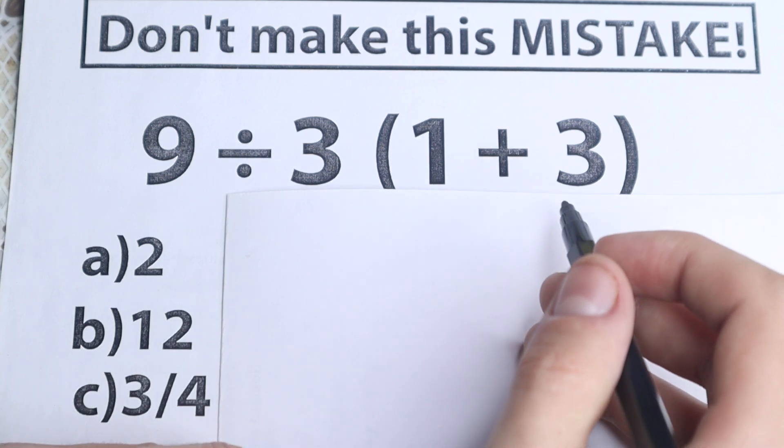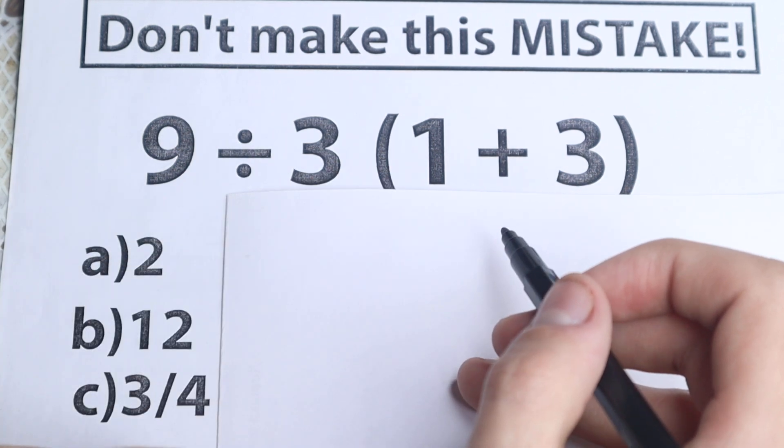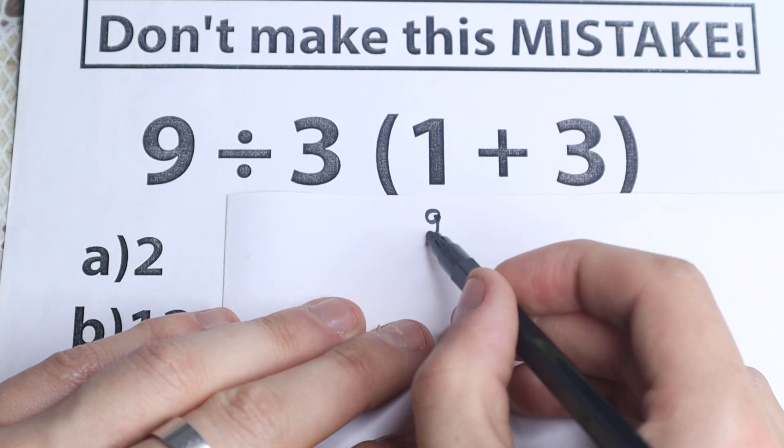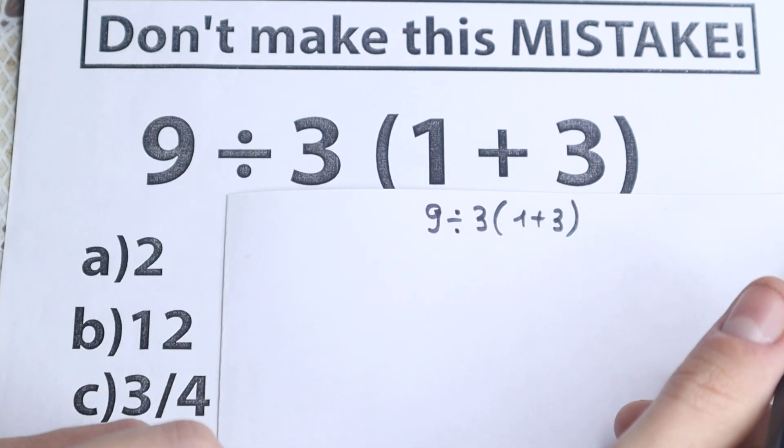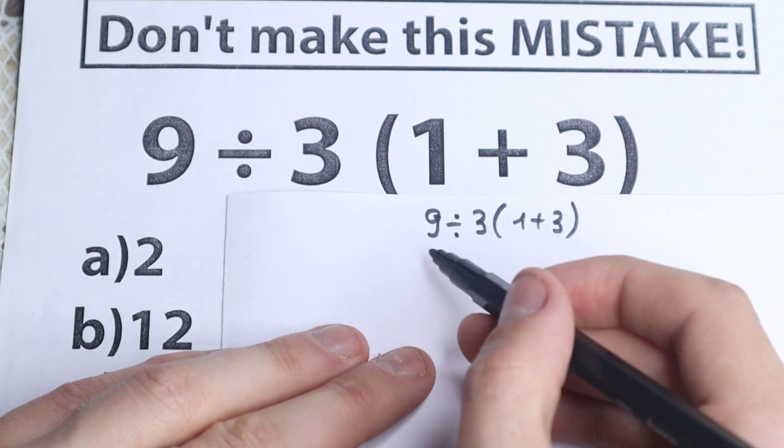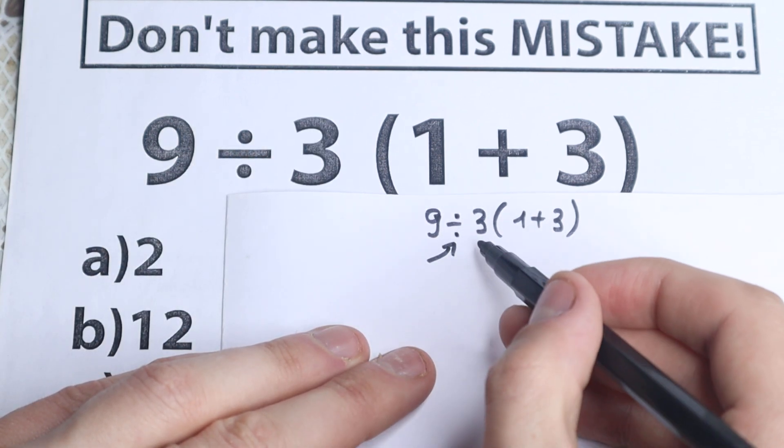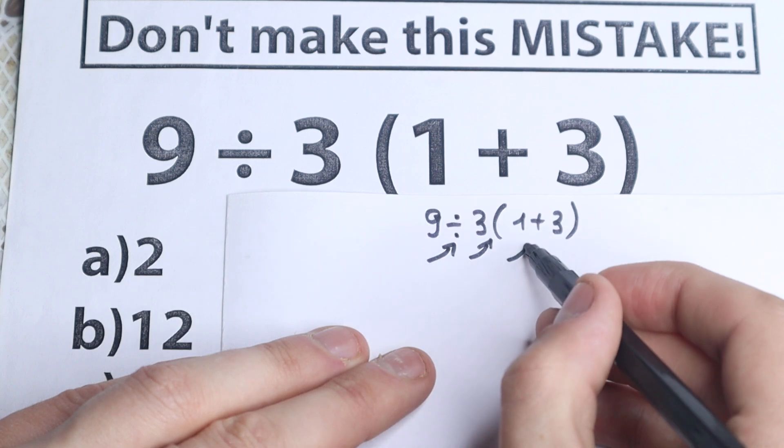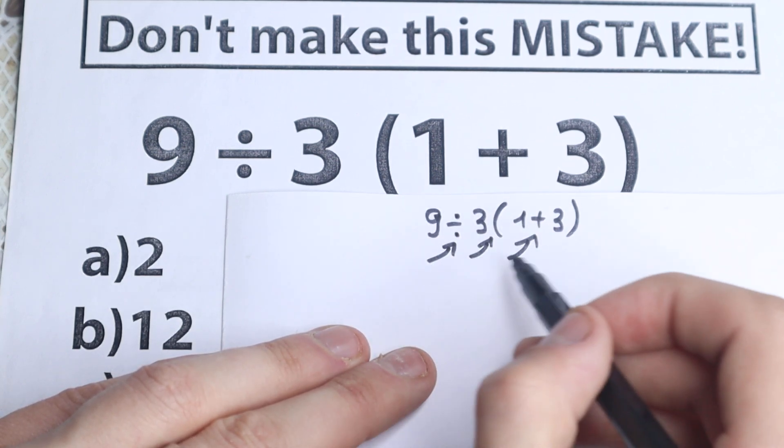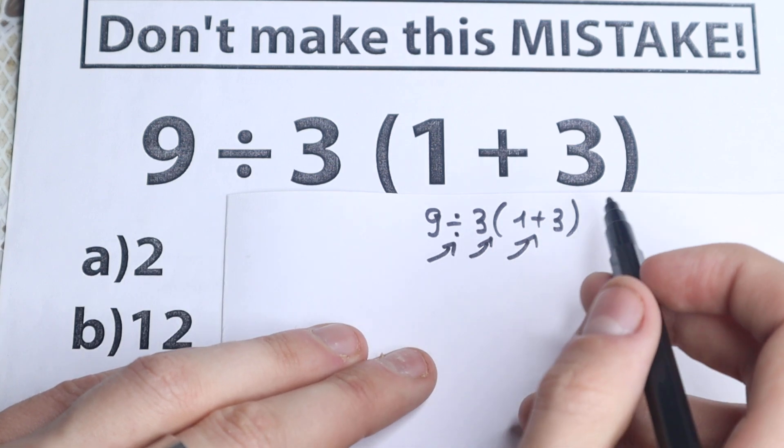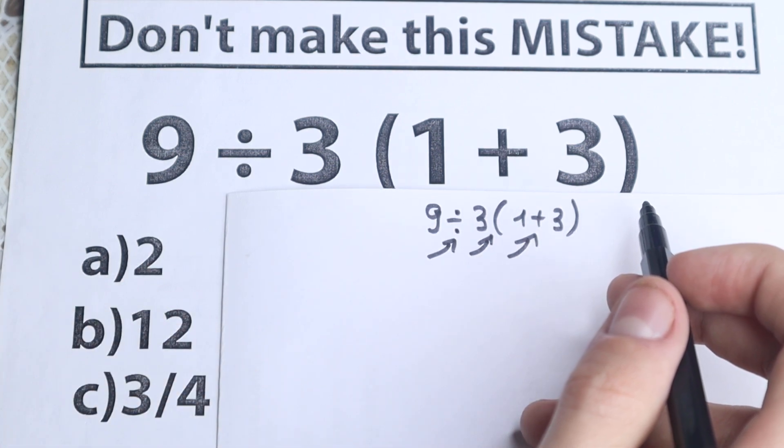First of all, we need to know about order of operations, because we have 9 divided by 3 and in parentheses 1 plus 3. There's a lot of discussion about the first step. Do we need to divide first, multiply, or start with parentheses? Is this our second step, third step? As you can see, there are a lot of combinations and we need to know what to start with.